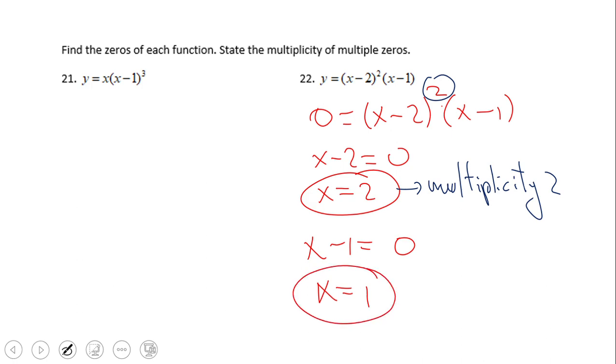If you have this answer for the zeros of the function, you did a wonderful job. x equals two and x equals one are the zeros of this function. The multiplicity of x equals two is two—we see that power of two here—and the multiplicity of x equals one is one.